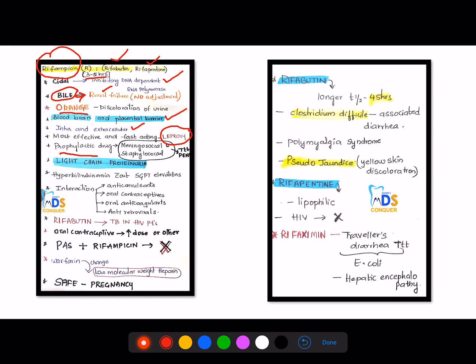And even it can cross blood-brain and placental barrier, and acts both intra and extracellular. And even it can act in leprosy also. And this is the prophylactic drug in meningococcal and staphylococcus infection. But the treatment is with vancomycin, but prophylactic is with rifampicin. And it can cause jaundice, proteinuria, and hyperbilirubinemia without SGPT elevations. And these are all drugs where you can see drug interactions with rifampicin.